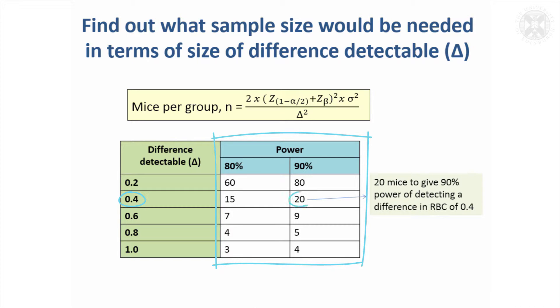You can look at what you need for different levels of power. If you wanted to detect 0.4 you would need 20 mice per group. If you wanted to detect a very small difference of 0.2, you're going to need 80 mice per group for 90% power, which is perhaps getting quite unrealistic. It can be helpful to look at different situations.